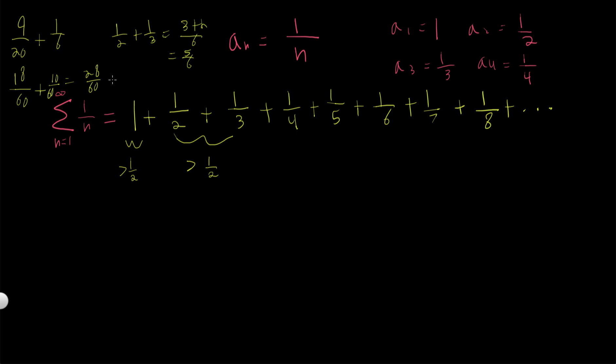All right, let's add 1 seventh to this. If we add 1 seventh to this, let's see what happens. So what common denominator can we get here? We'll just get a common denominator of 7 times 60. Let's see what happens.